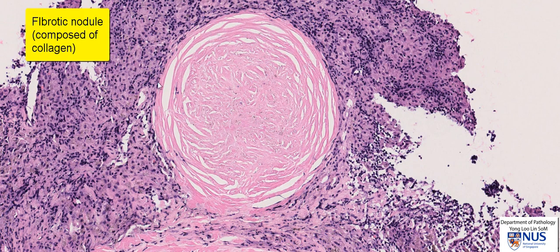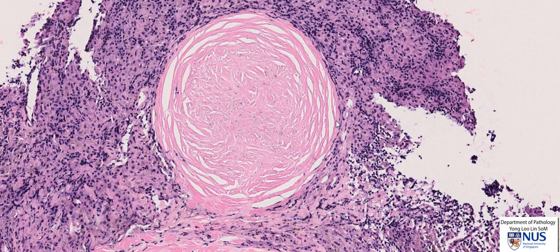Usually you can see that it is laid down in a concentric fashion. Sometimes there may be a thicker rim of more mature collagen at the periphery, and at other times there may even be calcifications laid down at the periphery of these nodules. We don't see any calcifications here, but if there are calcifications on imaging, they may appear like eggshell calcifications.